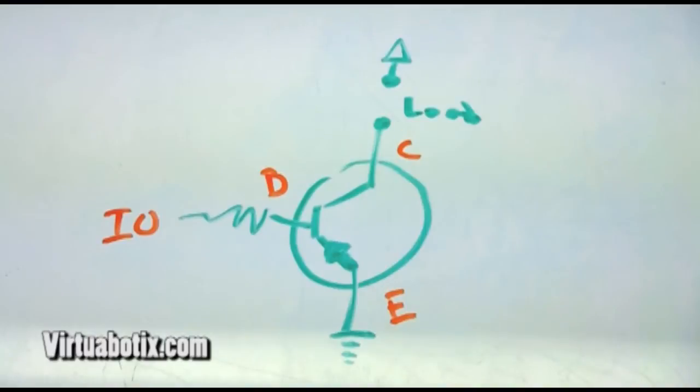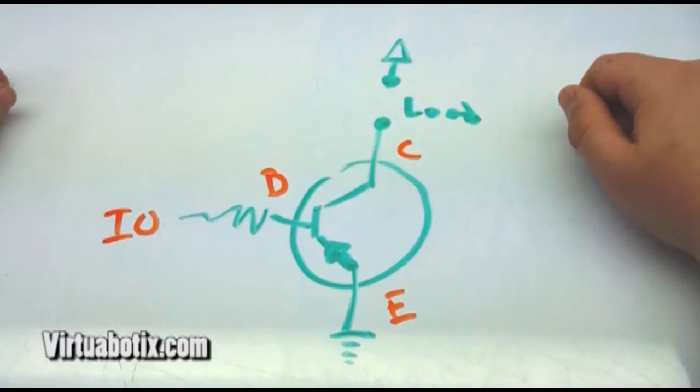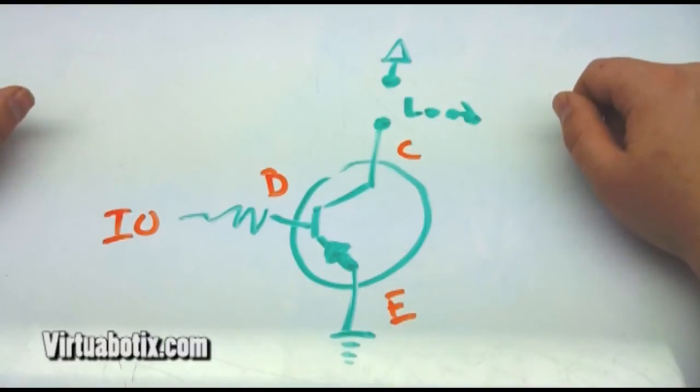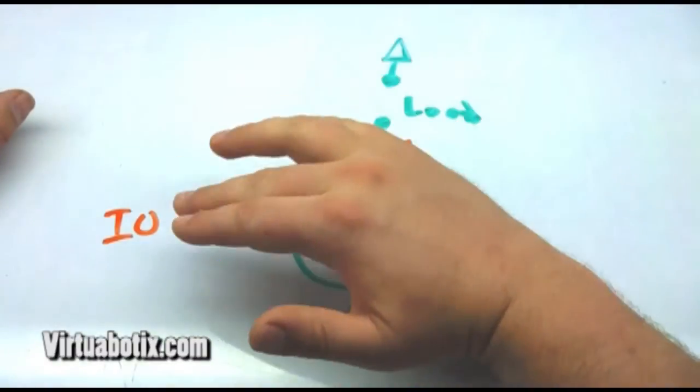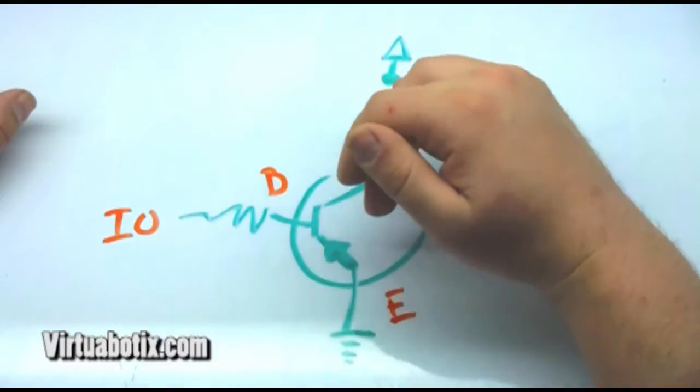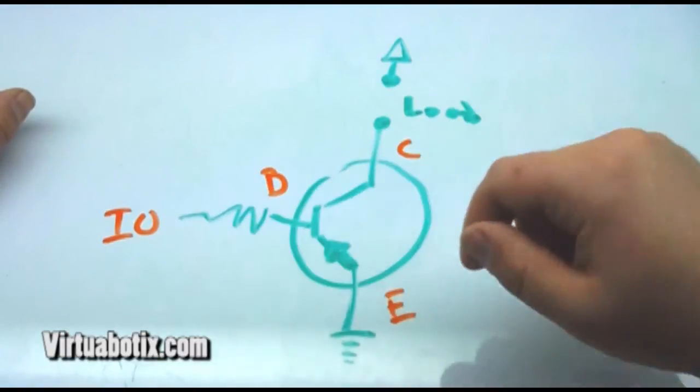Okay, so this circuit should look fairly familiar to you. This is the same NPN transistor circuit that we had before, with a generic load and the I.O. controlling through the base, through a thousand ohm resistor.